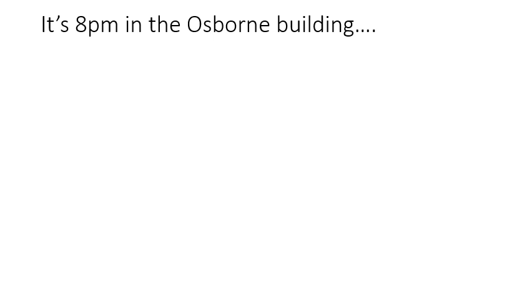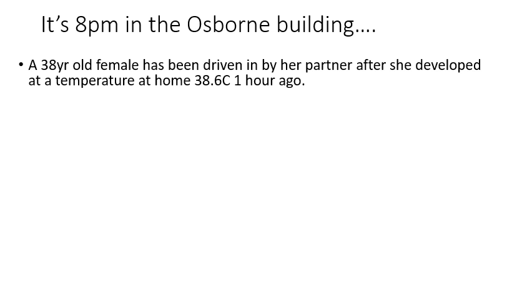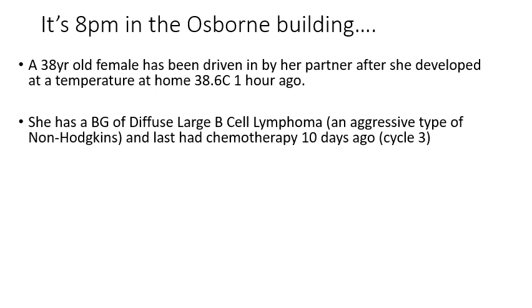On with the case. It's 8 p.m. in the Osborne building, and we're going to use a simulated case to demonstrate the points from this session. You've got a 38-year-old female who's been driven in by her partner after developing a temperature at home about an hour ago — 38.6 degrees, a reasonable fever. Her background is diffuse large B-cell lymphoma, an aggressive type of non-Hodgkin's lymphoma, and importantly she had chemotherapy about 10 days ago and is halfway through her treatment.